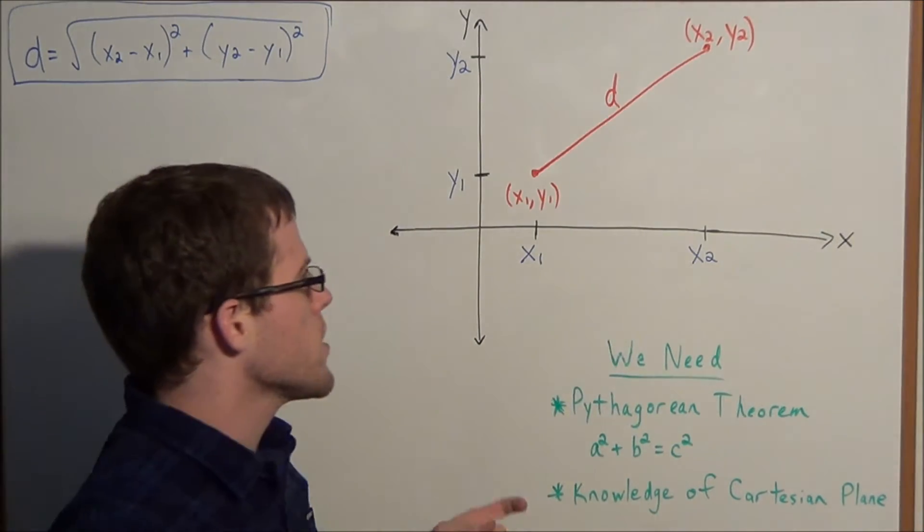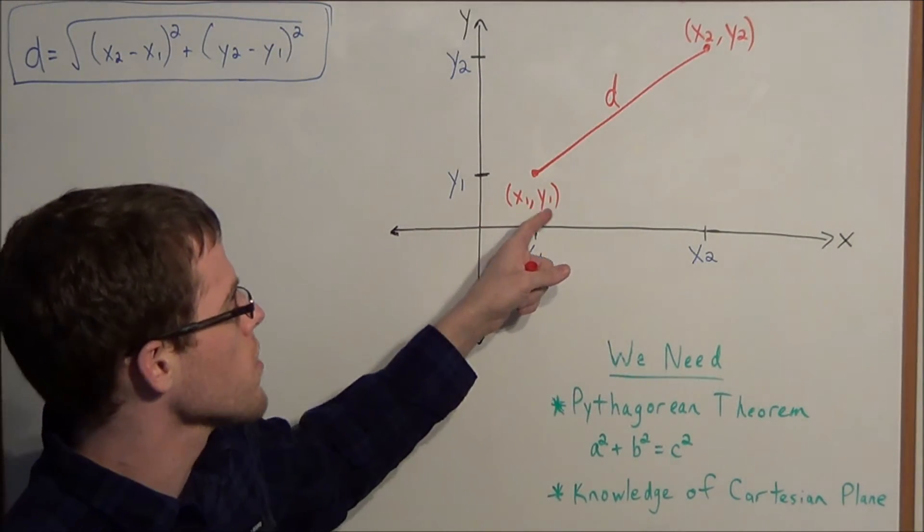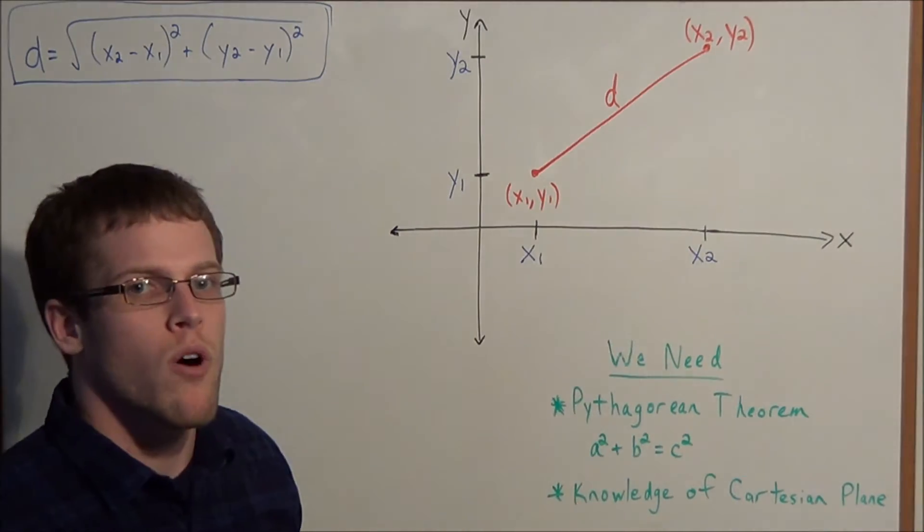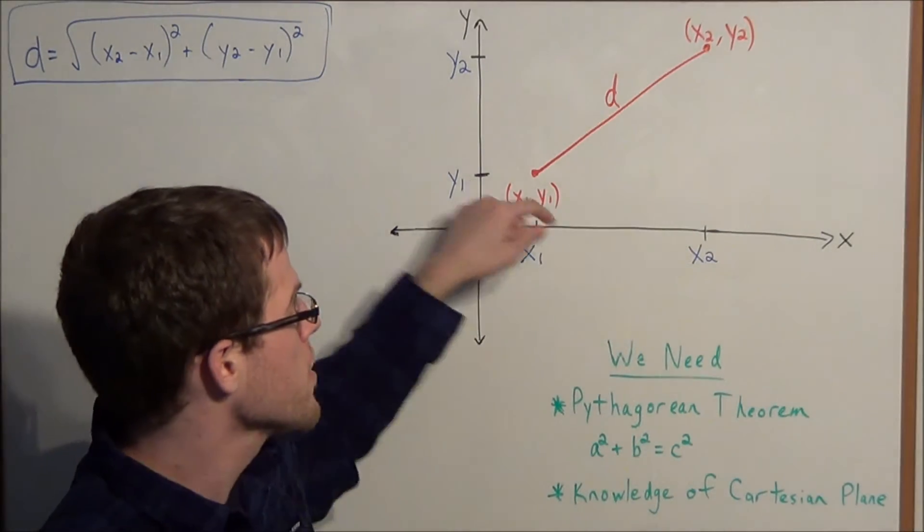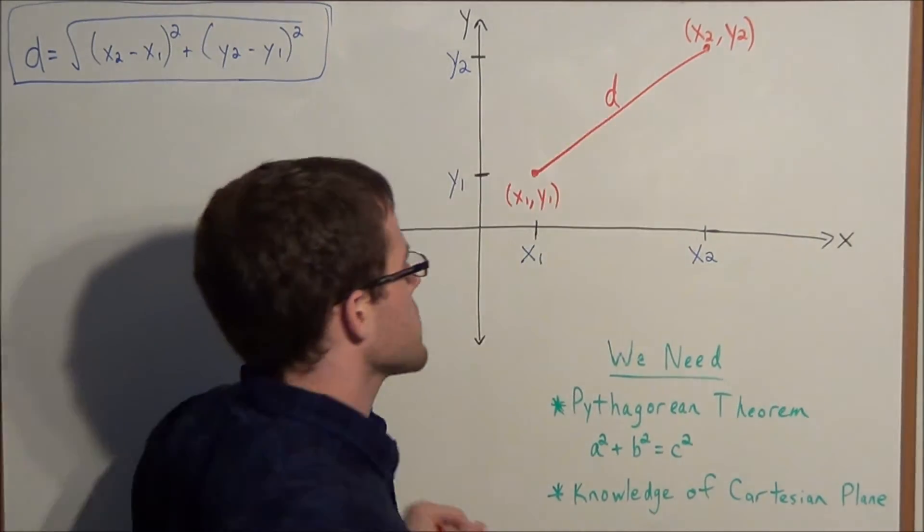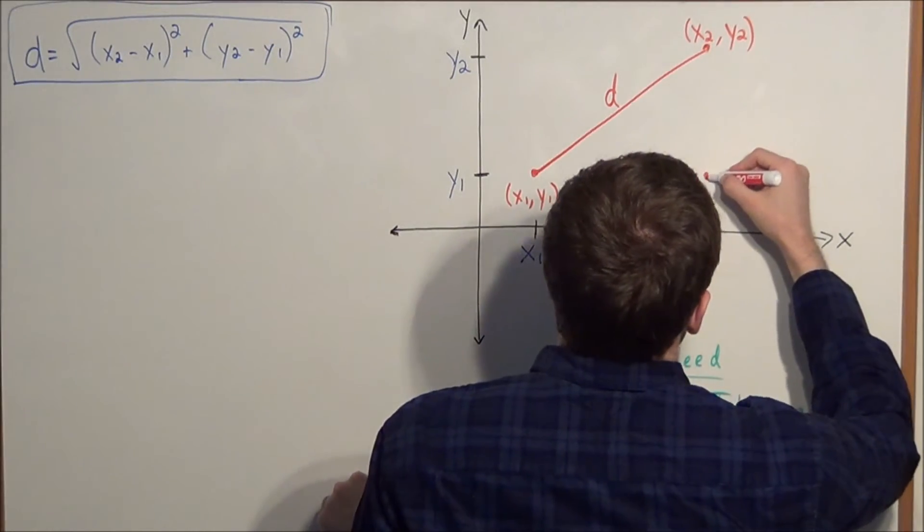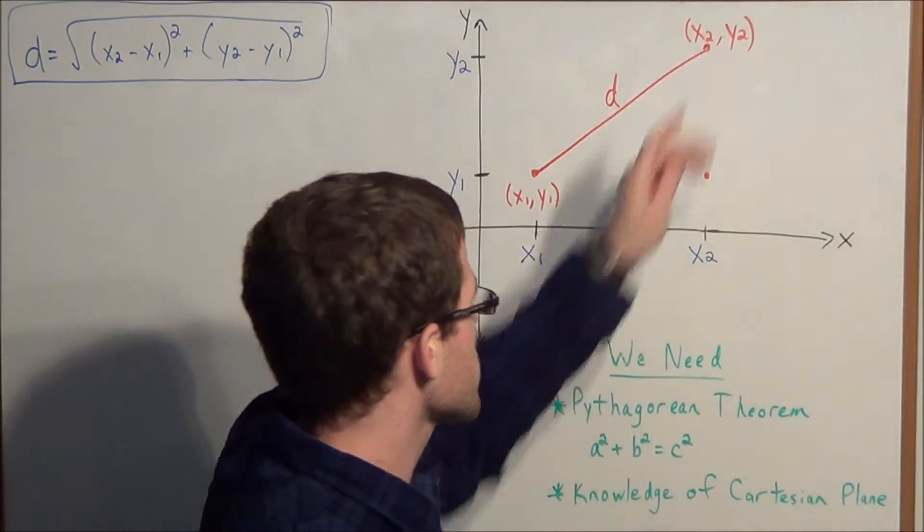But now what would be an alternate way of getting from the point (x1, y1) to (x2, y2)? Well, we could trace a path from (x1, y1) to (x2, y2). And the path I want to look at, I want to travel horizontally and then vertically.